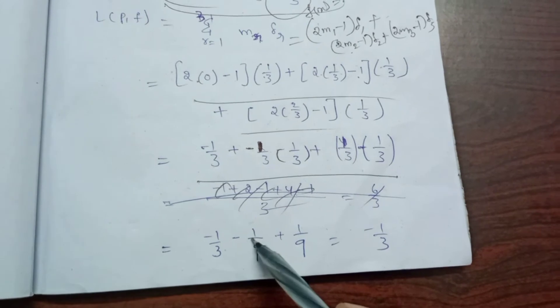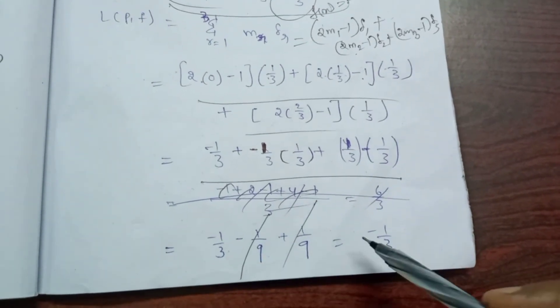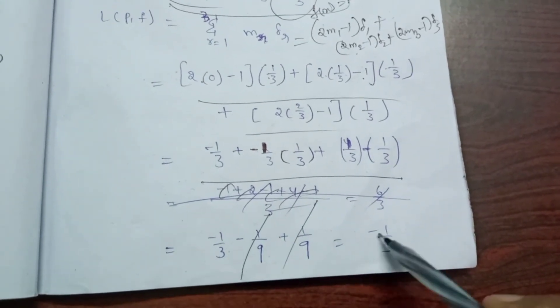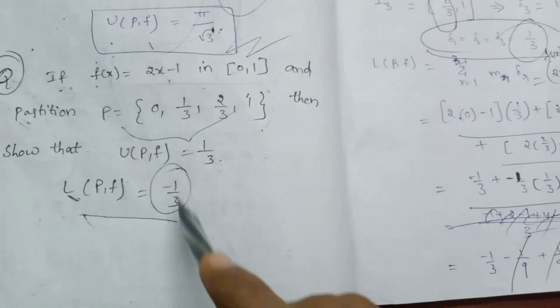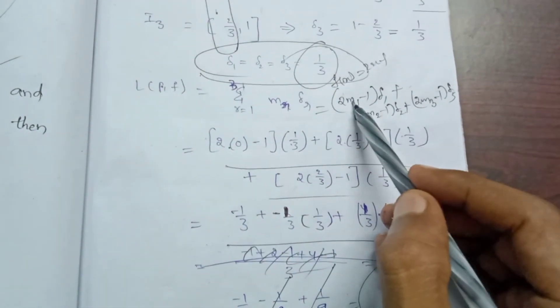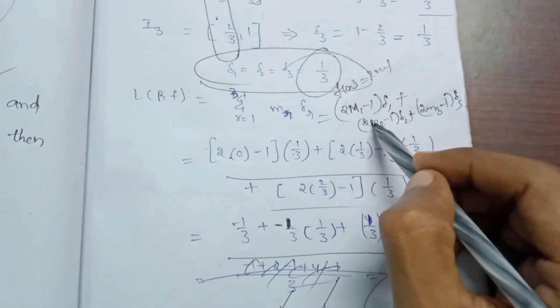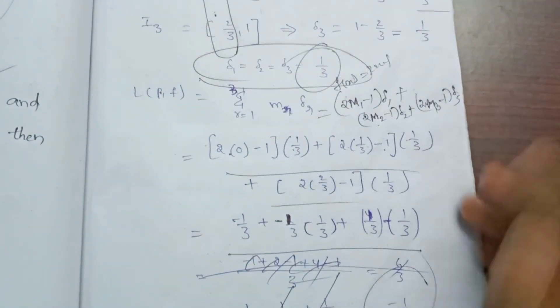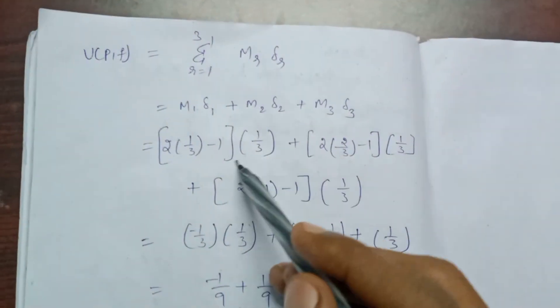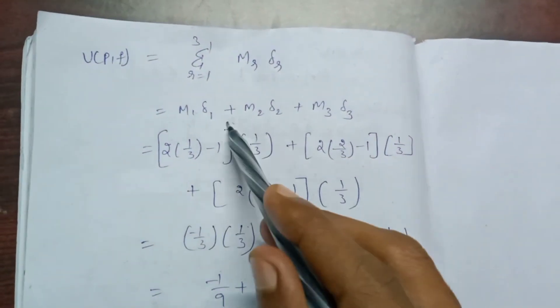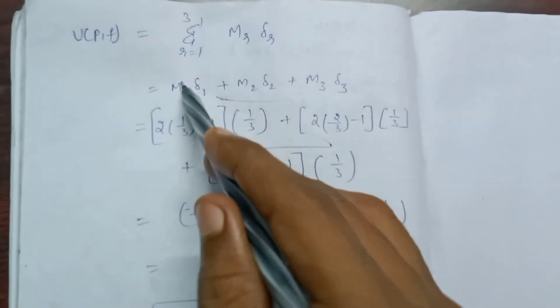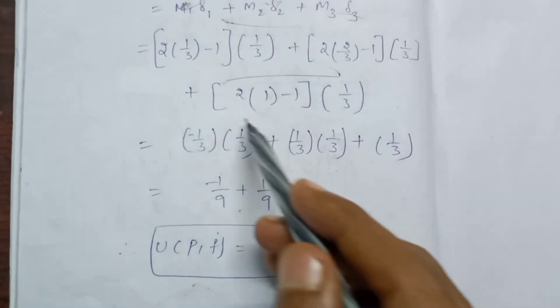I will cancel the minus 1/9 and plus 1/9. I will cancel the minus 1/3. Here is the UPF. I will cancel capital M1, capital M3, and the right-hand side terms, giving us the final result for UPF and LPF.